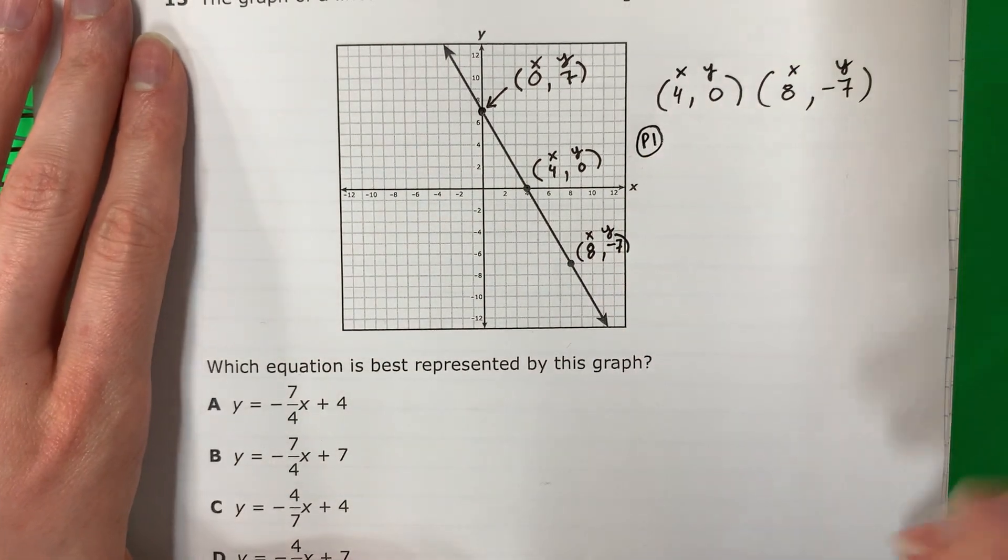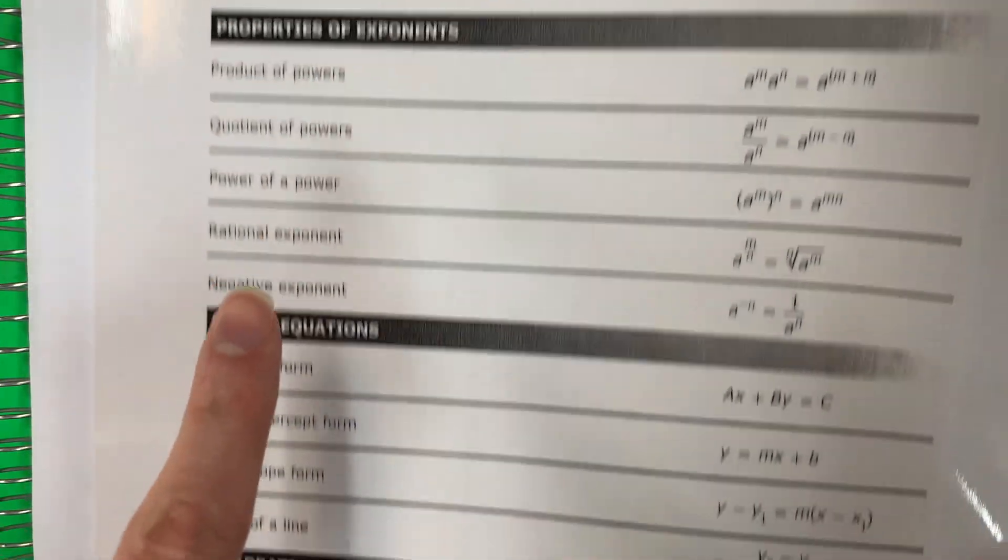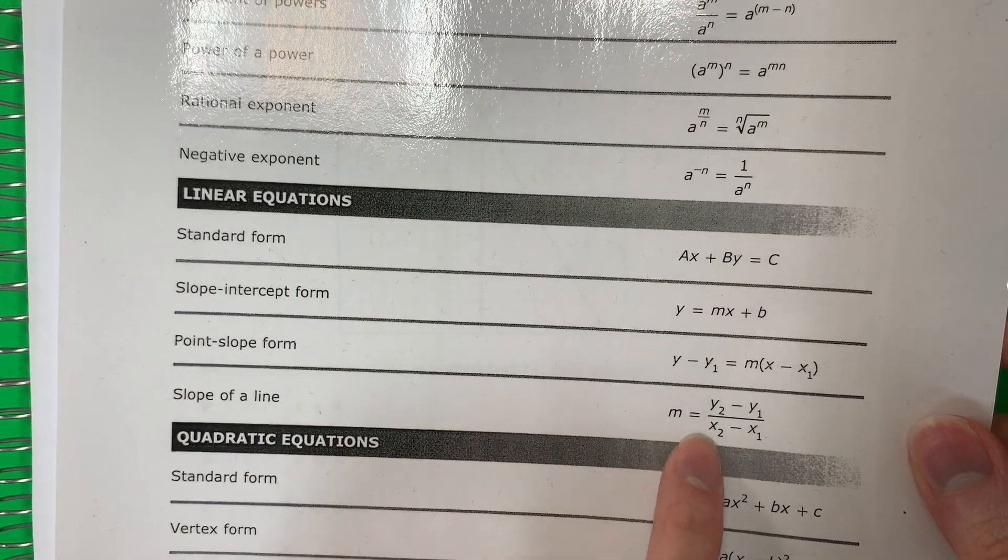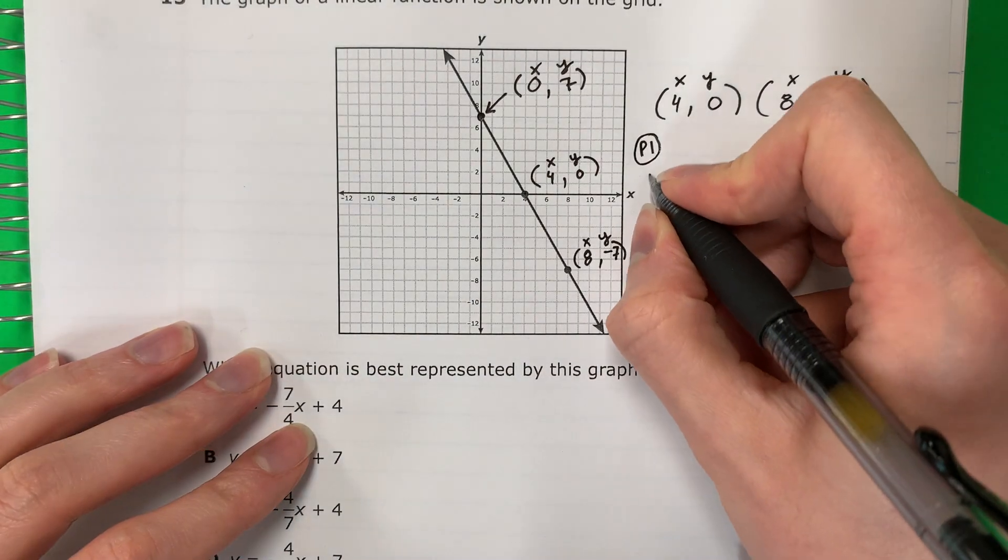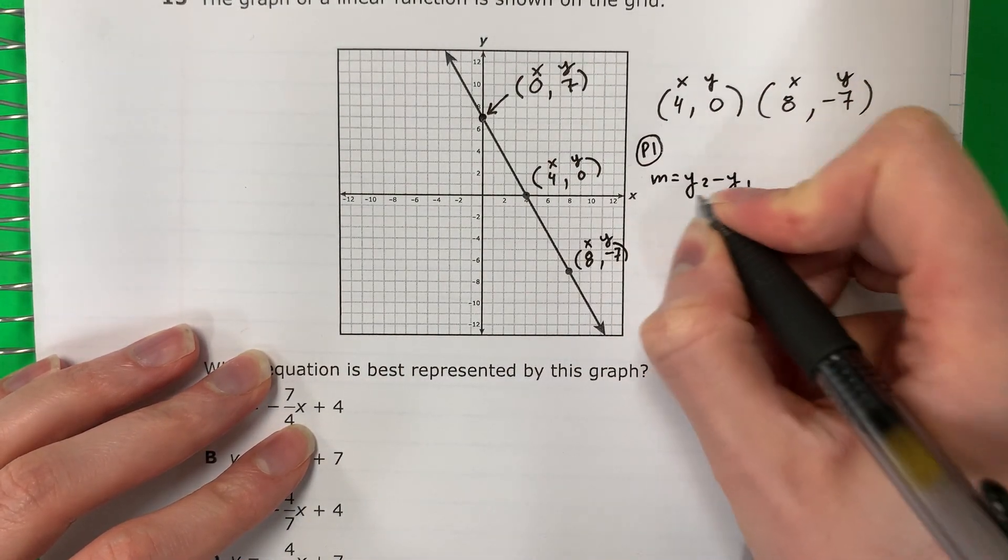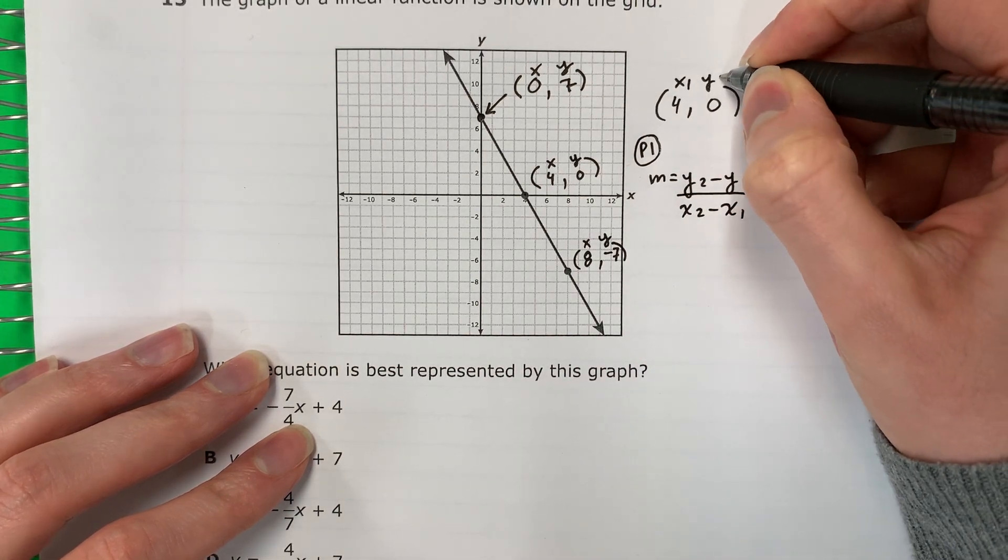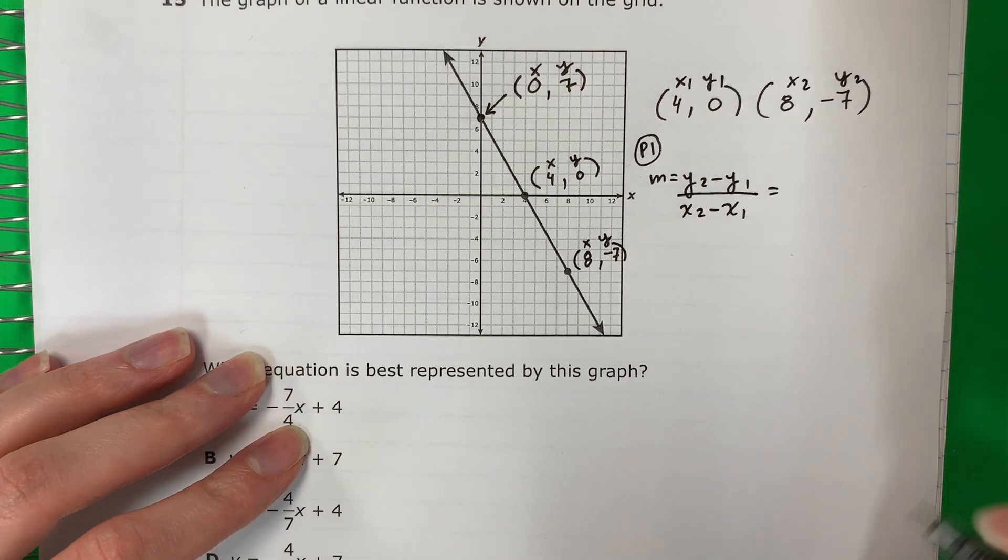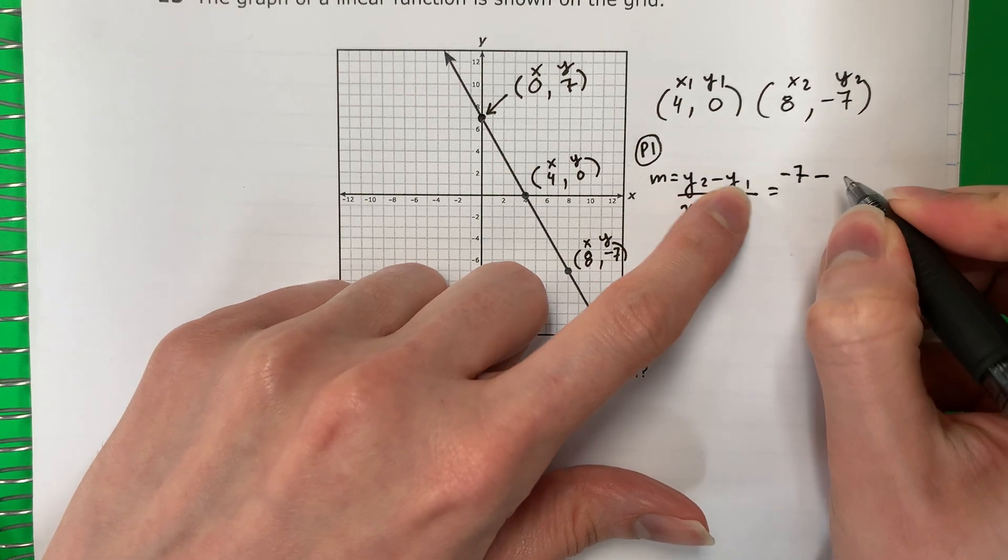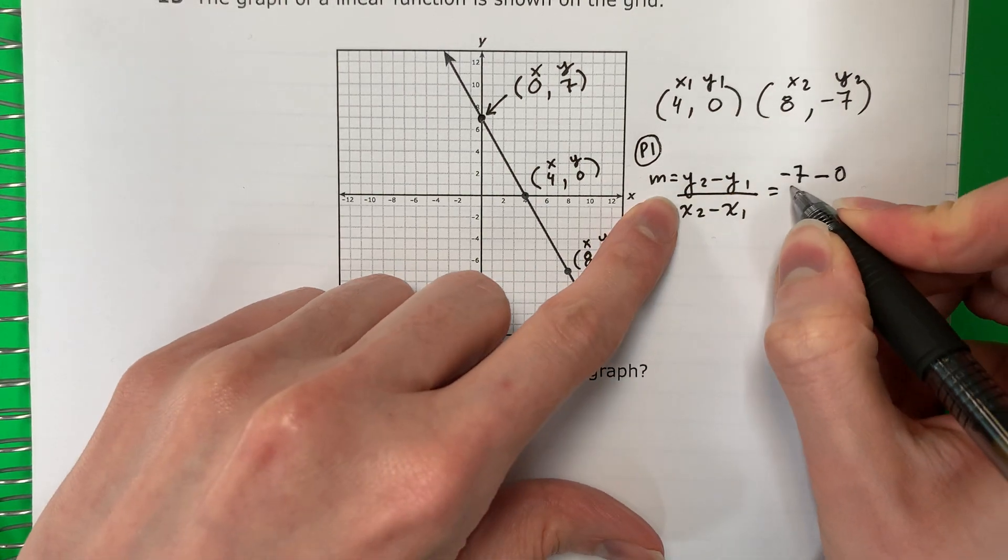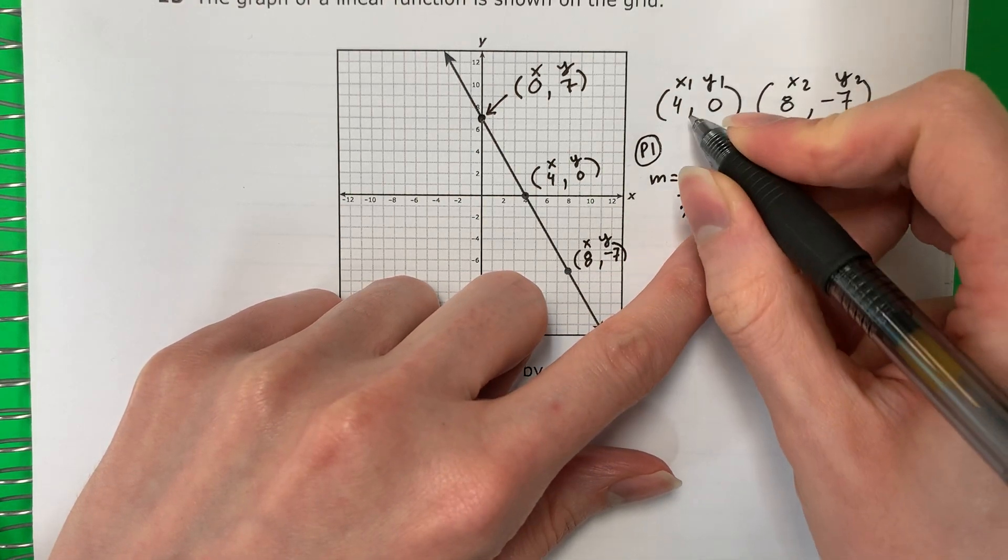Part one, we're going to find the slope. And you can find that formula here. So that is slope of a line. M equals Y2 minus Y1 divided by X2 minus X1. This is X1, Y1, X2, Y2. So first is Y2, Y2 is negative seven, minus Y1 is zero, divided by X2 is eight, minus X1 is four.